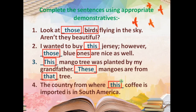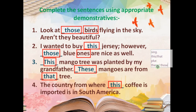To summarize demonstratives: first, check whether the noun is singular or plural. If singular, you have two options: 'this' (nearby) or 'that' (far). If plural, you again have two options: 'these' (nearby) or 'those' (far). First write the rule, then start doing the exercise.